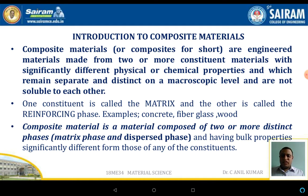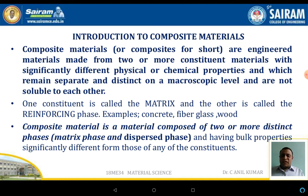One of the constituents is called the matrix; the other constituent is called the reinforcement. For example, in concrete: cement is one material, sand is one material, gravel is another material, and the steel used as reinforcing material is yet another different material. These are put together to make an RCC structure. The composite material is a material composed of two or more distinct phases - the matrix phase and the dispersed phase.